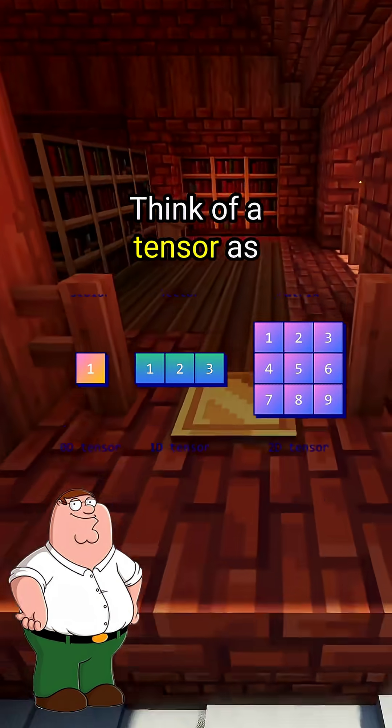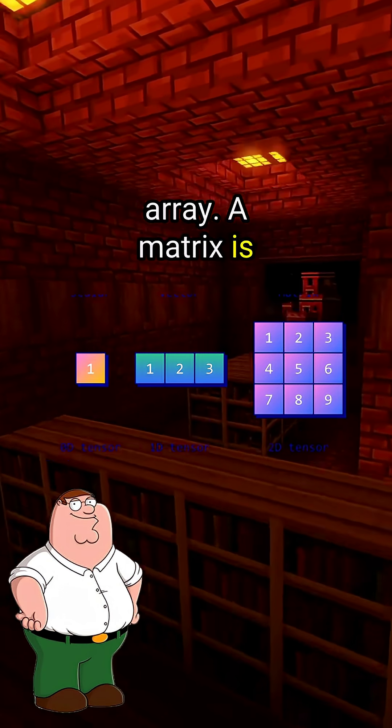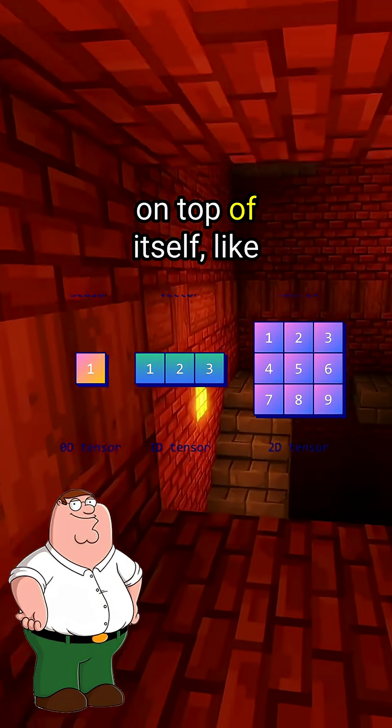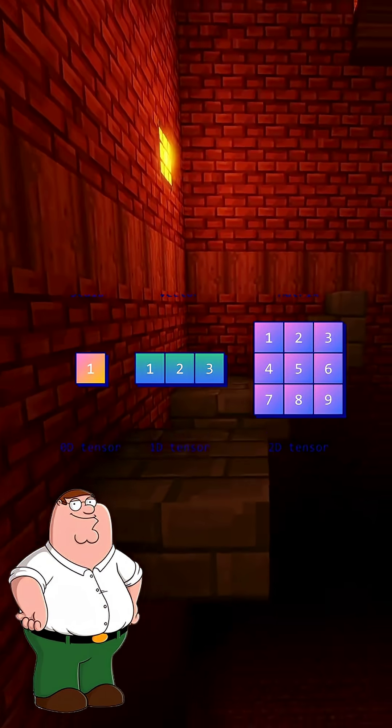Think of a tensor as a multidimensional array. A matrix is 2D. Tensors go to 3D, 4D, or more. Imagine a spreadsheet stacked on top of itself, like Excel on steroids.